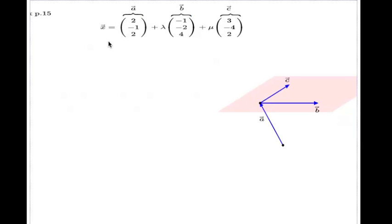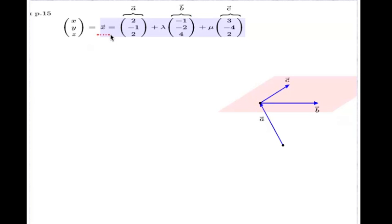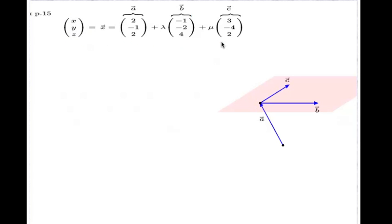This is something we've done before. I did this in class and I hope you practiced this method in your tutorials or independent studies. When we go to the Cartesian form of the plane, we introduce unknowns which are the components of your position vector x. Conventionally we use x, y, z for three dimensions. We equate the left-hand side to the right-hand side component by component, and we try to get rid of lambda and mu.